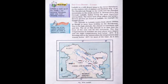Ladakh is a cold desert lying in the Great Himalayas on the eastern side of Jammu and Kashmir. Ladakh is made up of two words: La meaning mountain pass and Dakh meaning country. The Karakuram Range in the north and the Zhanskar Mountains in the south enclose it. Several rivers flow through Ladakh, the Indus being the most important among them. The rivers form deep valleys and gorges, and several glaciers are found in Ladakh, for example the Gangri Glacier.